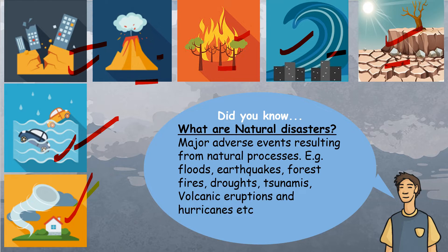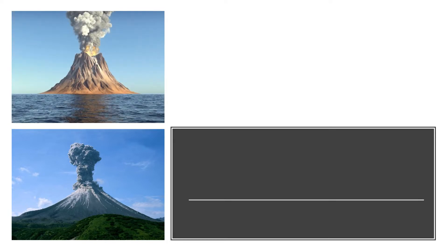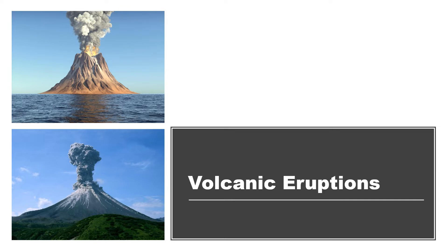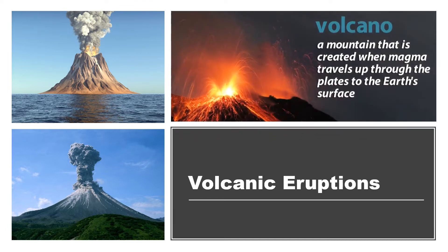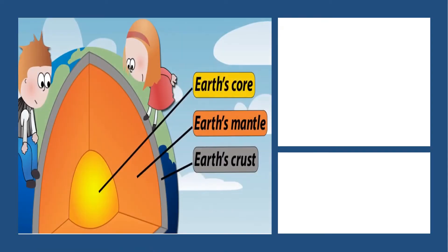Can you guess what is going on in this picture? Yes, it's a picture of a volcanic eruption. So our first natural disaster is volcanic eruption. A volcano is basically a mountain that is created when magma travels up out of the earth's crust.